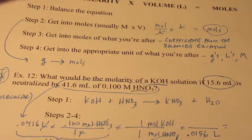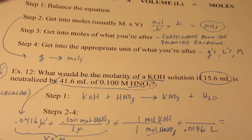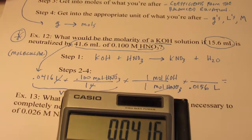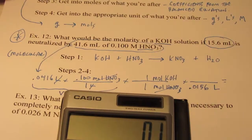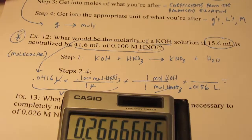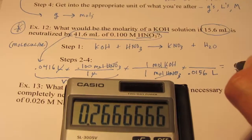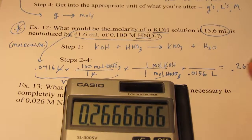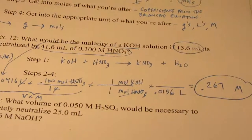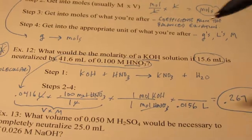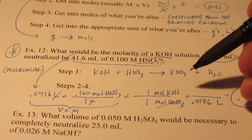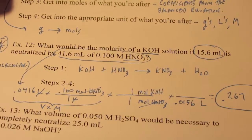Let's pull out the calculator: 0.0416 times 0.1 divided by 0.0156. I'm only allowed three significant figures, so the molarity of my potassium hydroxide is 0.267 moles per liter. You might want to rewind and go through that a couple of times, because this is important. You'll be doing that for homework — it's the first part of assignment fifty-eight.